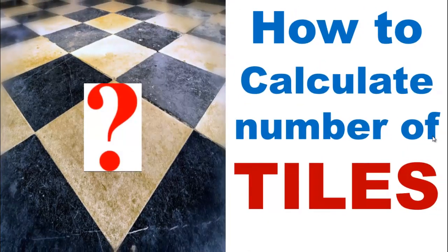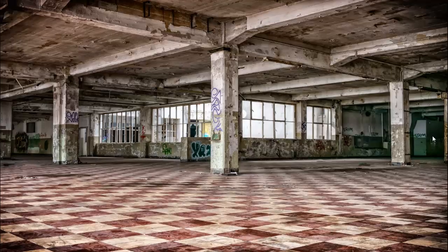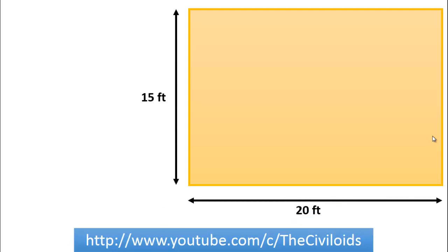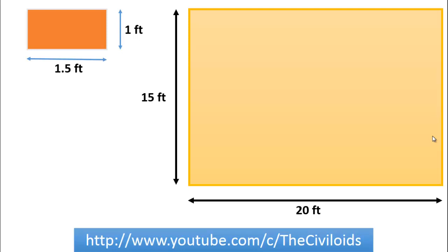We are going to learn how to calculate the number of tiles required to cover a surface. This surface may be a wall or a floor. For this purpose, we are going to do a simple example of determining the tile for a given surface. Let's suppose we have a surface and we have to calculate the number of tiles to cover it. The dimension of the surface is 20 feet by 15 feet, and the size of the tile which we are going to use is 1.5 feet by 1 foot.